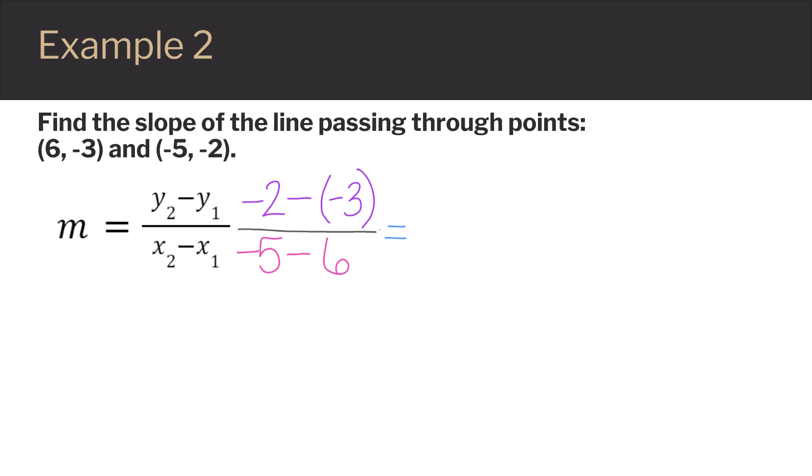From here, I want to simplify my fraction. Negative 2 minus negative 3 would change because minus negative 3 is actually addition, just like the last example had. So then negative 2 plus 3 would give us a positive 1 in the numerator.